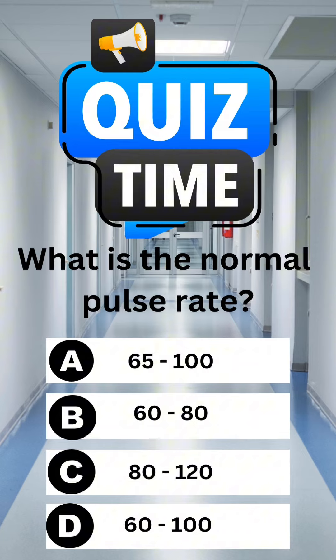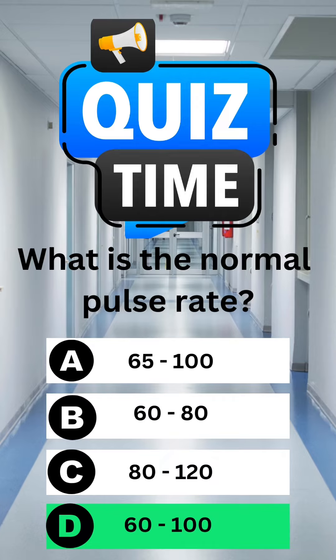What is the normal pulse rate? A. 65 to 100. B. 60 to 80. C. 80 to 120. D. 60 to 100. The correct answer is D. 60 to 100.